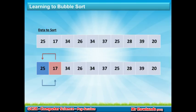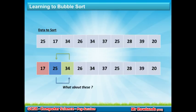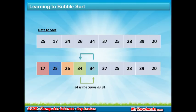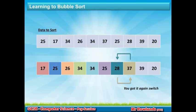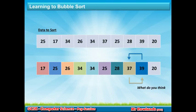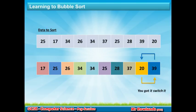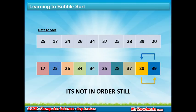Here's how the bubble sort works. Compare 25 and 17: 17 is less than 25, so they swap. Compare 25 and 34: correct order, no swap. Compare 26 and 34: wait — is 26 less than 34? Yes, so they switch. Same process continues: compare each adjacent pair, swapping if the left is greater than the right. When you finish one pass through the whole list, you've completed the first pass — but the data may still not be in order.